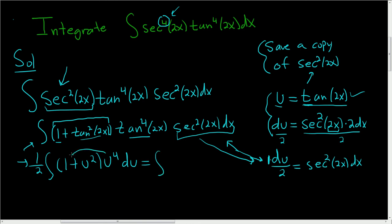Let's distribute. u to the fourth times 1, don't forget the 1 half, u to the fourth times 1 is u to the fourth, plus u to the fourth times u squared is u to the sixth.